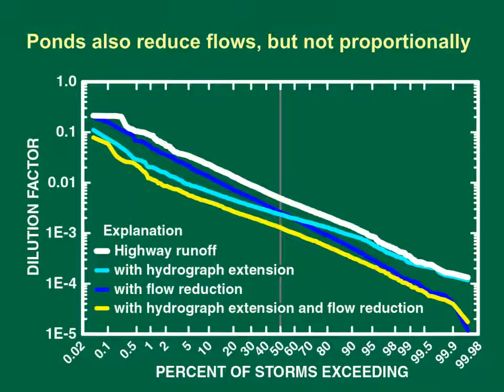For the modeled pond, based on the medians of best-fit volume reduction and flow extension statistics, hydrograph extension is the major contributor to the dilution factor reductions at this hypothetical site when highway flow volumes are a large proportion of downstream flows.